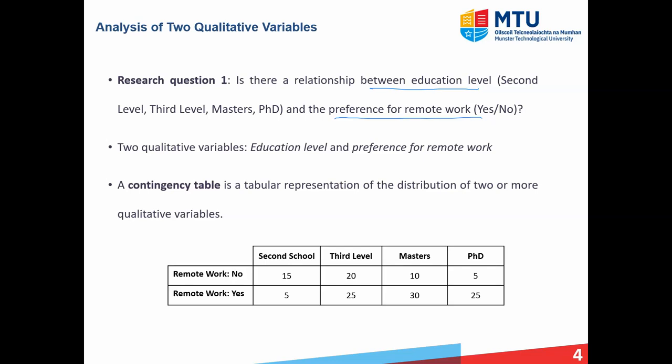A useful way to represent the data for two qualitative variables is a contingency table. This is just a tabular representation of the distribution of two or more qualitative variables. For example, let's say you have a sample of 135 people, and for each person you ask what is their education level and their preference for remote work. The data can be summarized in the contingency table — for example, 15 people have an education level of second level and their preference for remote work is no, and 30 people have a master's and their preference for remote work is yes.